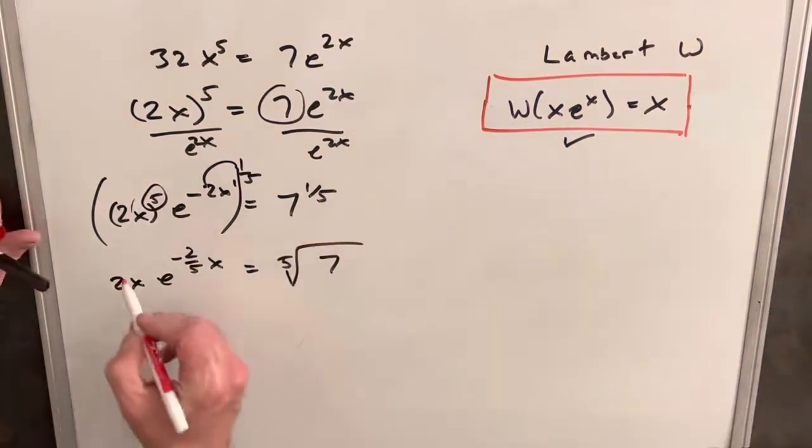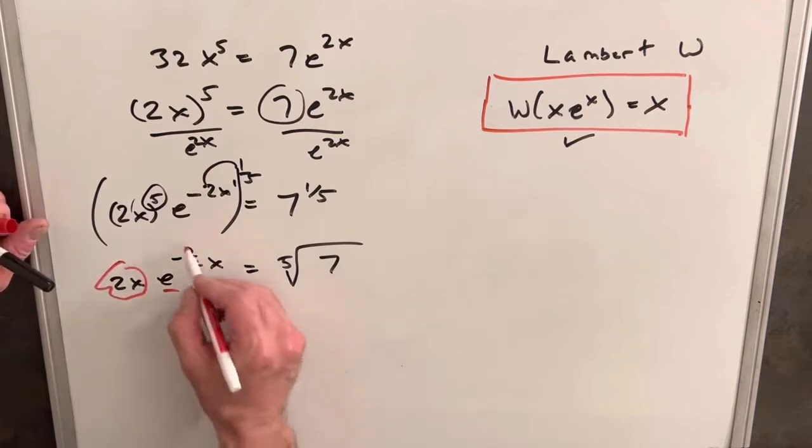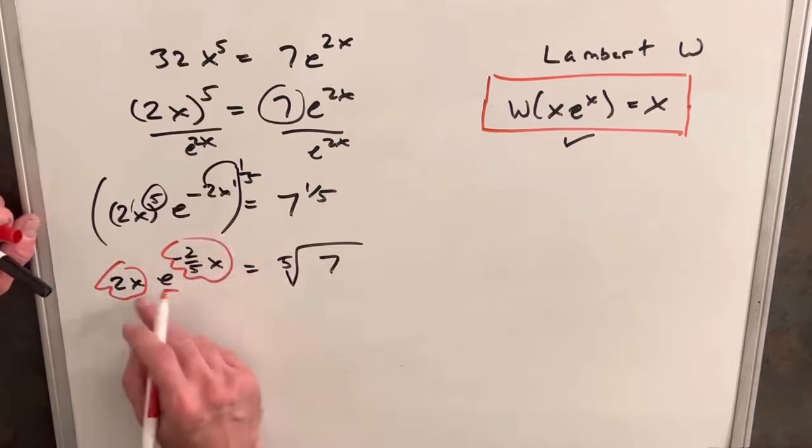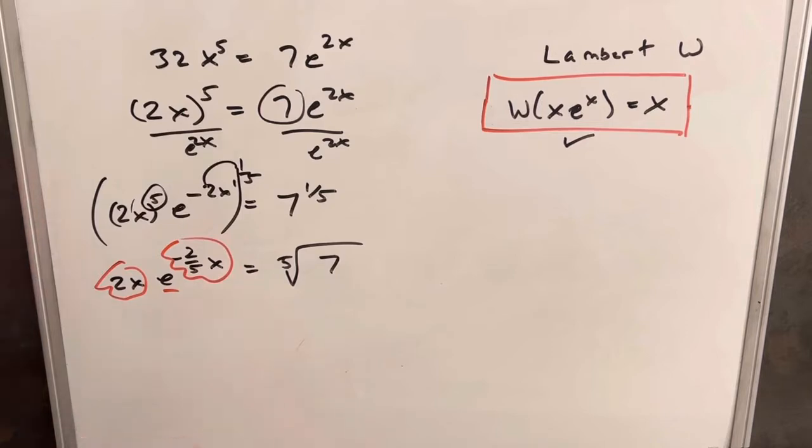And we're kind of making some progress towards our form. We've got our e, and we've got the right power anyway, and we just have different coefficients. But that's easy to fix, because we can do that by multiplying a constant. So what we'll do...